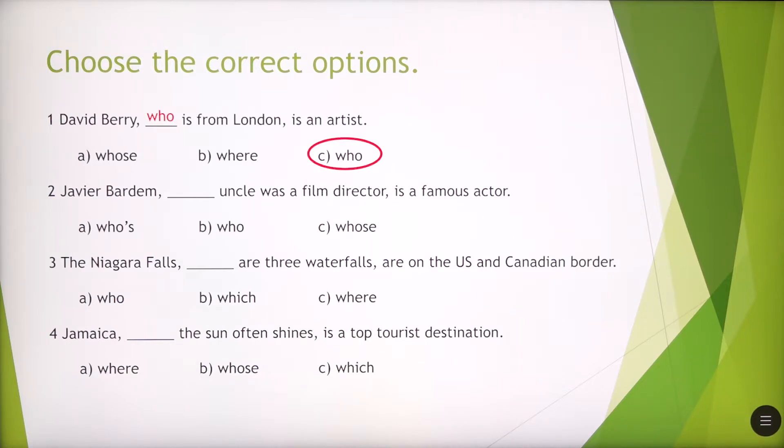Now we've got sentence two. It's C, whose. Javier Bardem, whose uncle was a film director, is a famous actor.